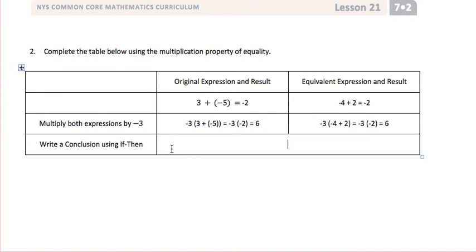So we can say, if 3 plus negative 5 equals negative 4 plus 2, then negative 3 times 3 plus negative 5 is equal to negative 3 times negative 4 plus 2. The expressions are equal to each other.